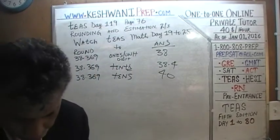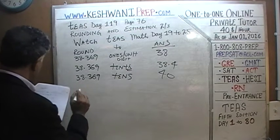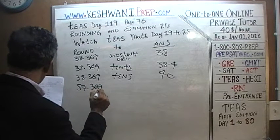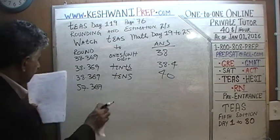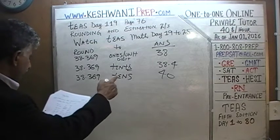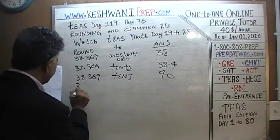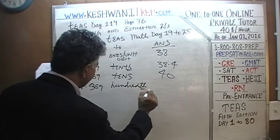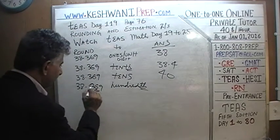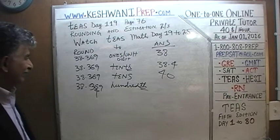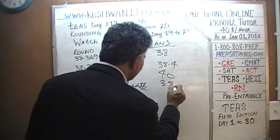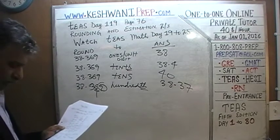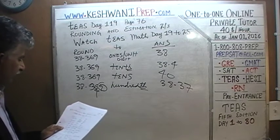I'm going to pick up some speed now. We did 38.369 rounded to: the unit digit, the tenths digit, the tens digit, and the hundredths digit. Let's review: we did the unit, we did the tenths, we did the tens, we did the hundredths.